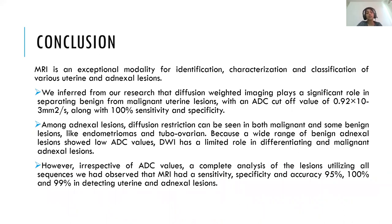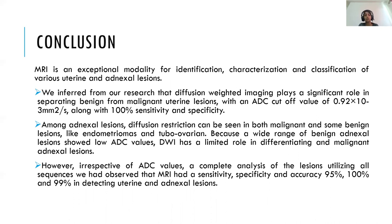In conclusion, MRI is an exceptional modality for identification, characterization, and classification of various uterine and adnexal lesions. DWI plays a significant role in separating benign from malignant uterine lesions with an ADC cutoff value of 0.92 × 10⁻³ mm²/s along with 100% sensitivity and specificity. Among adnexal lesions, diffusion restriction can be seen in both malignant and some benign lesions like endometriomas and tubo-ovarian abscesses, giving DWI a limited role in differentiating benign from malignant adnexal lesions. However, with complete analysis utilizing all sequences, MRI had a sensitivity, specificity, and accuracy of 95%, 100%, and 99% respectively in detecting uterine and adnexal lesions. Thank you.